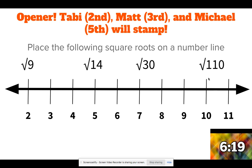And then what's the perfect square closest to 110? Well, 10 times 10 is 100, and 11 times 11 is 121, so that'll probably go right between 10 and 11 as well.